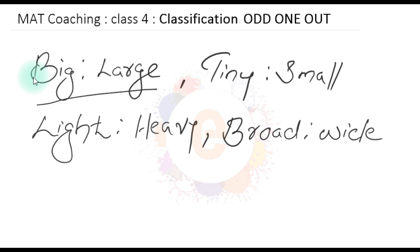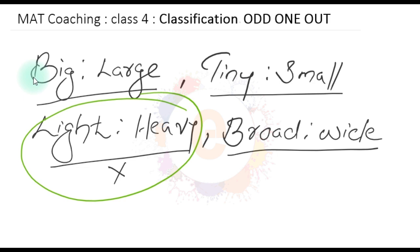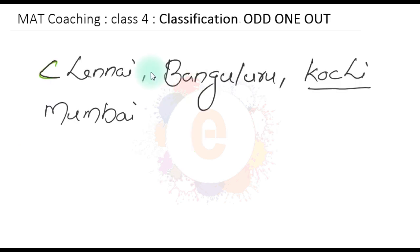Next question: big/large, tiny/small, light/heavy, broad/wide. Big and large have the same meaning (synonyms). Tiny and small have the same meaning. Broad and wide are synonyms. But light and heavy are opposites (antonyms). So the answer is light/heavy, as it is the odd one out.